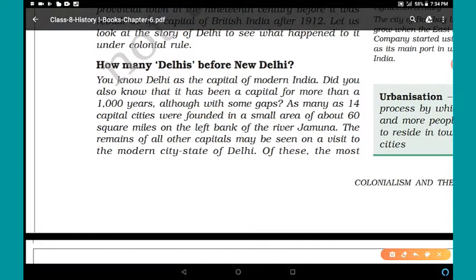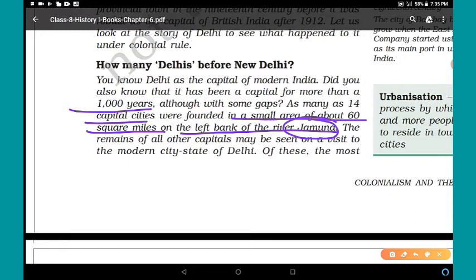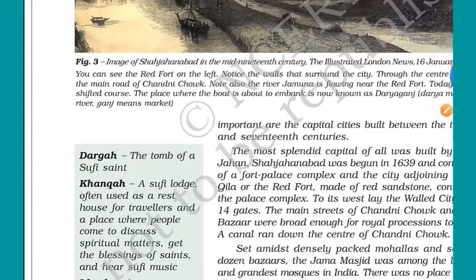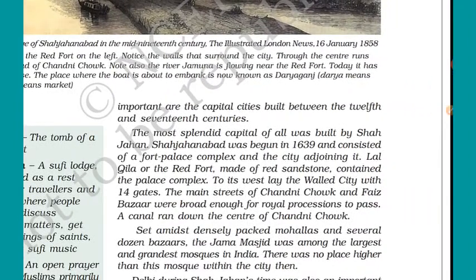How many Delhis before New Delhi? You know Delhi as the capital of modern India, but did you also know that it has been a capital for more than 1000 years — although with some gaps? As many as 14 capital cities were founded in a small area of about 60 square miles on the left bank of the river Jamuna or Yamuna. The remains of all these capitals may be seen on a visit to the modern city-state of Delhi.